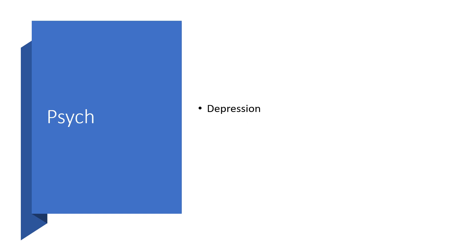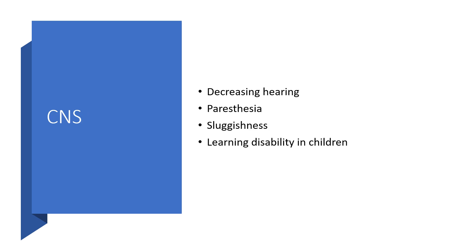In psychiatry: depression. As a matter of fact, hypothyroidism is part of the differential diagnosis of depression. In the central nervous system: decreasing hearing, paresthesia, sluggishness, and learning disability in children.